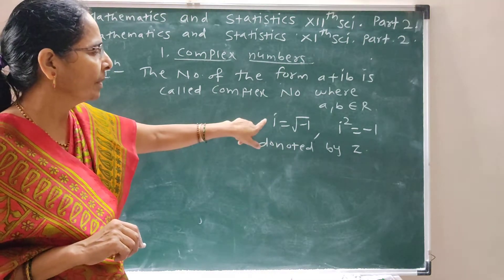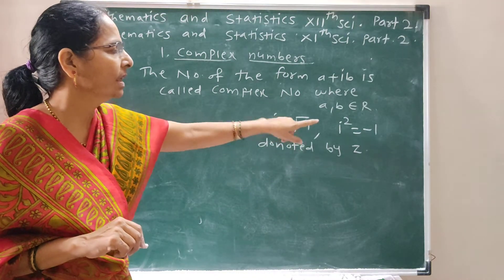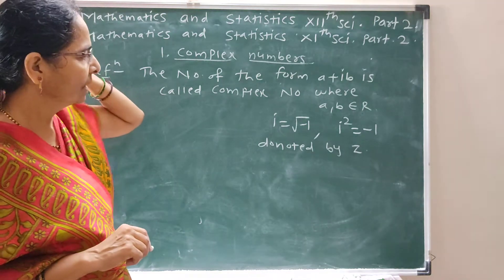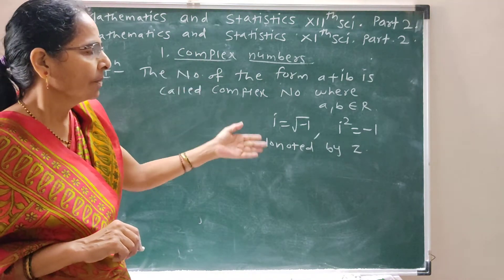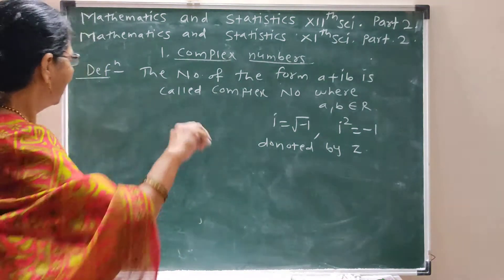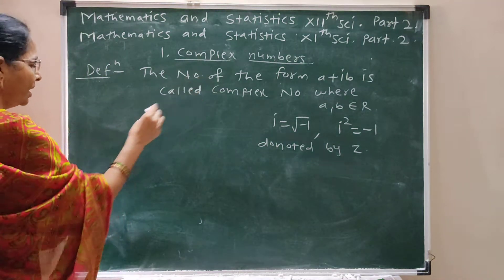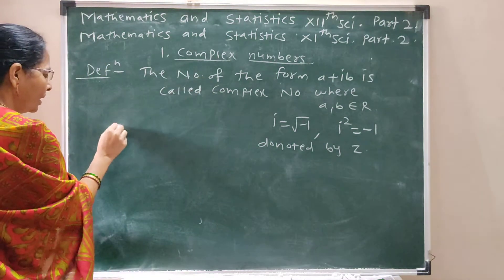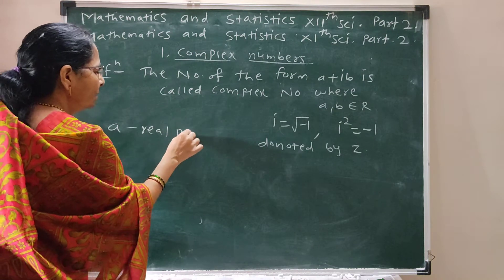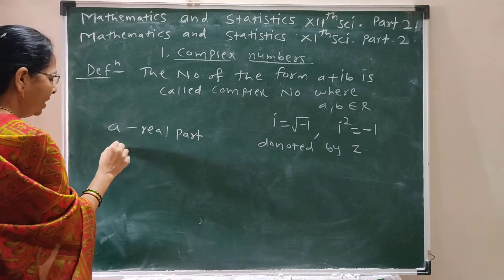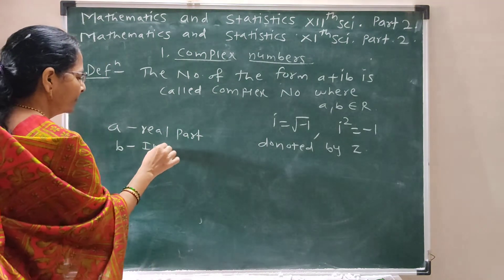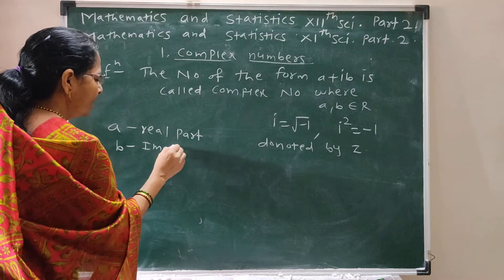So remember: i is root of minus 1, i squared is minus 1. The Complex Number is denoted by Z. In this case, A is called the Real Part and B is called the Imaginary Part.